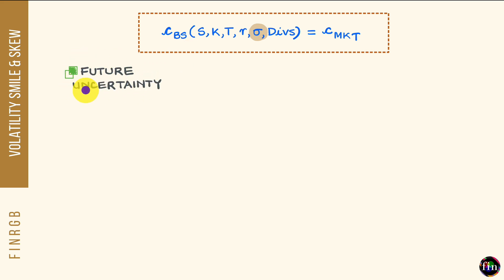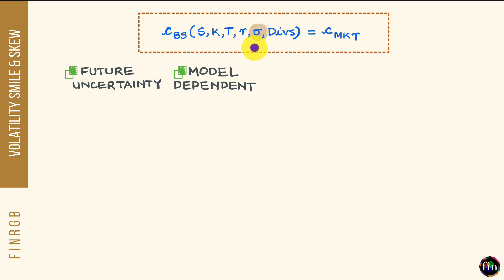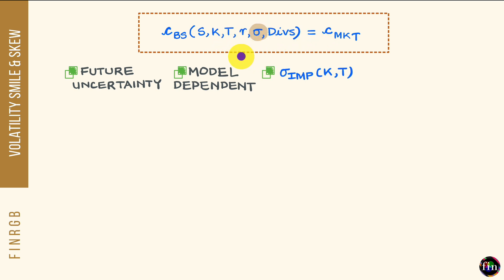It has this forward-looking connotation attached to it. Number two, implied volatility is a model-dependent number. If instead of the Black-Scholes model you were using some other model to imply out this volatility number, that implied volatility might potentially come out to be different. Number three, implied volatility really does depend on the option from which it has been implied. If you were to repeat this exercise for different options which differ in terms of their strike and/or their time to expiry, every time the implied volatility might turn out to be different.